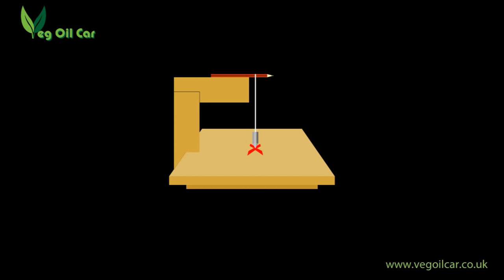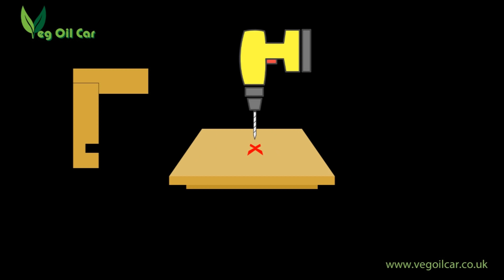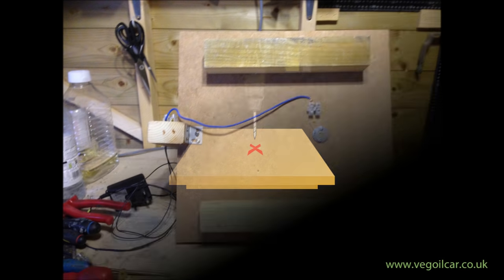Now we need to establish where the nichrome wire will pass through the baseboard. You can use a square for this if you have one that's large enough. If not, and as long as you're working on a nice level surface, a simple plumb line will do just as well.